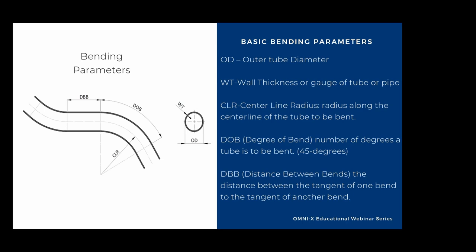Bending parameters include the OD, or outer tube diameter; the wall thickness, or gauge of the tube or pipe; CLR, or center line radius, which is the line along the center of the tube being bent; and DOB, or degree of bend, which is the number of degrees the tube is being bent — in this example, 45 degrees.